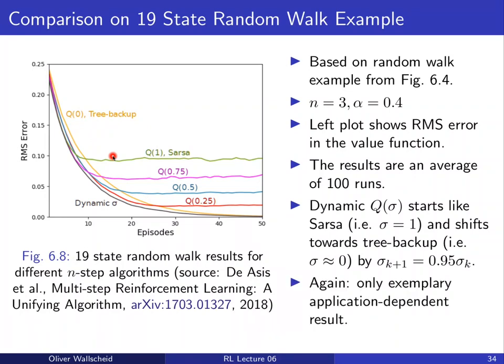However, this example is only illustrative and highly application-dependent. We cannot expect these outcomes for Q-sigma to always hold in realistic situations. It gives an intuition that combining quick learning and long-run accuracy could be a good idea, but it must be put to the test for every specific application.